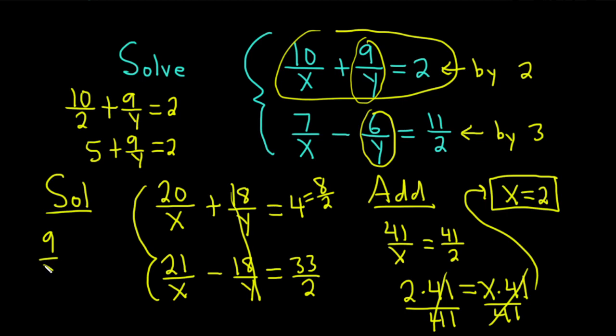That gives us 9 over y equals negative 3. Multiplying by y, we have 9 equals negative 3y. And finally, dividing by negative 3 is going to give us y equals negative 3.